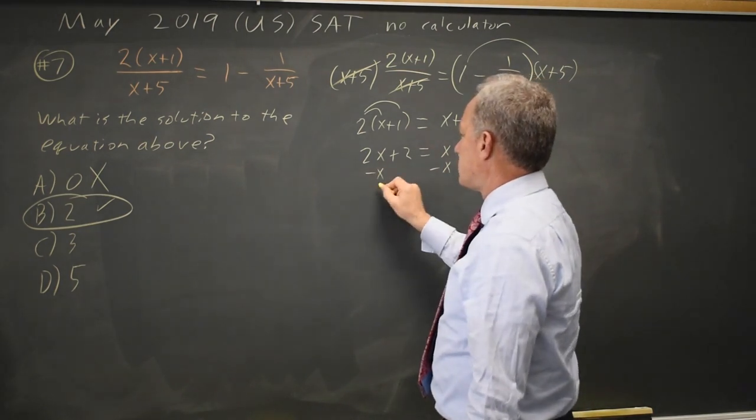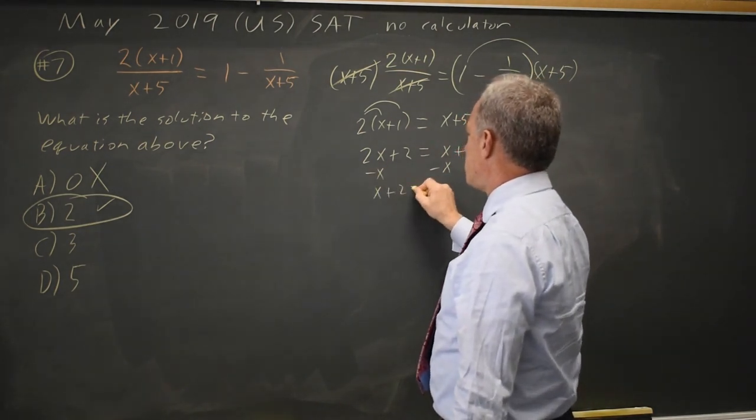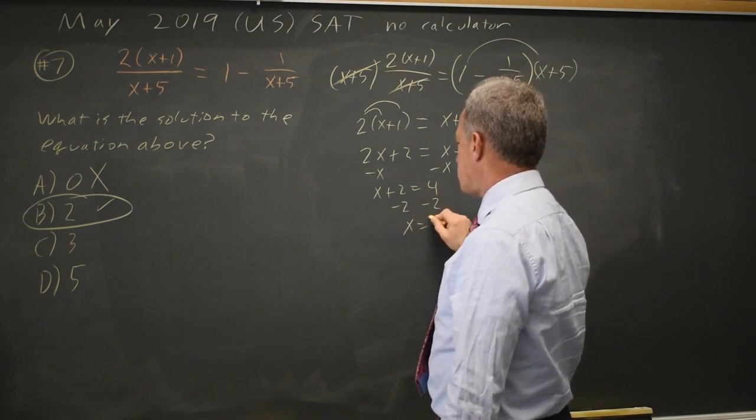Subtract x from both sides. x plus 2 equals 4. Subtract 2 from both sides. x equals 2.